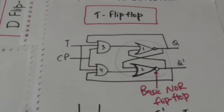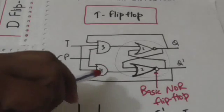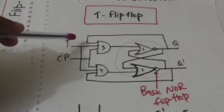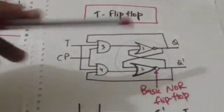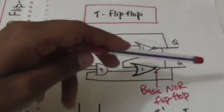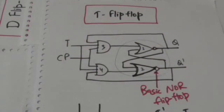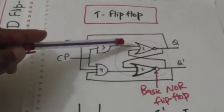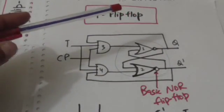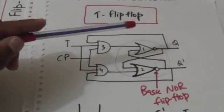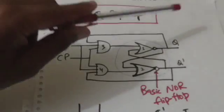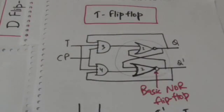Hello friends, welcome back. In this tutorial we will study about the T flip-flop. It is the logic diagram of T flip-flop. It has one input T and two outputs Q and Q̄. Q and Q̄ are complements of each other. Q gives the normal value of the bit stored in the flip-flop, and Q̄ gives the complement value of the bit stored in the flip-flop. The state of the flip-flop is determined by the value of Q.